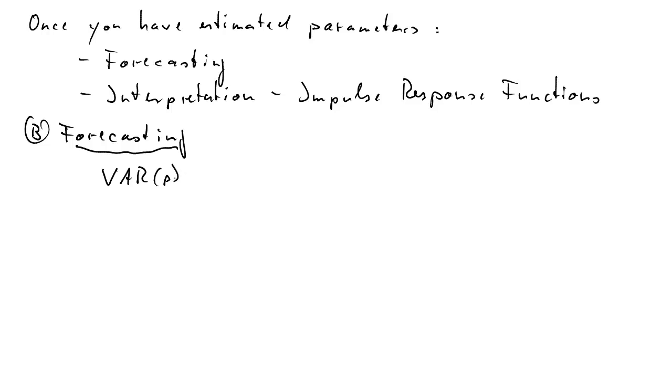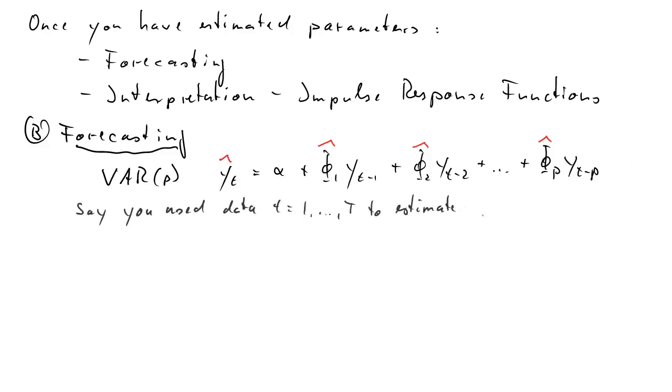Here again we have a VAR(p) model in vector form, the VAR form. Once you estimate parameters, you get hats for these coefficients and a hat for y_t, and then of course we need to remove the error term. Let's say we use observations for t from 1 to capital T to estimate these parameters. Now what we want to do is form an expectation about the value for y at time capital T plus 1 using information at time capital T.